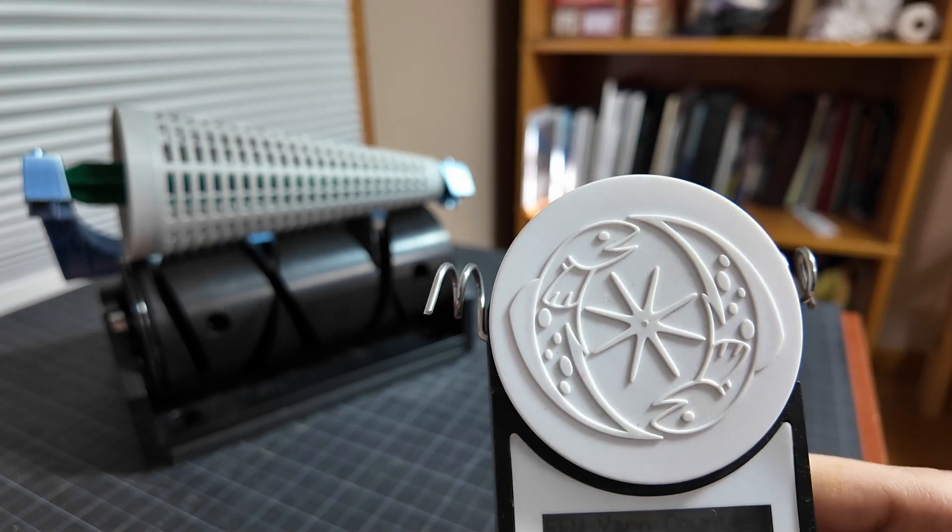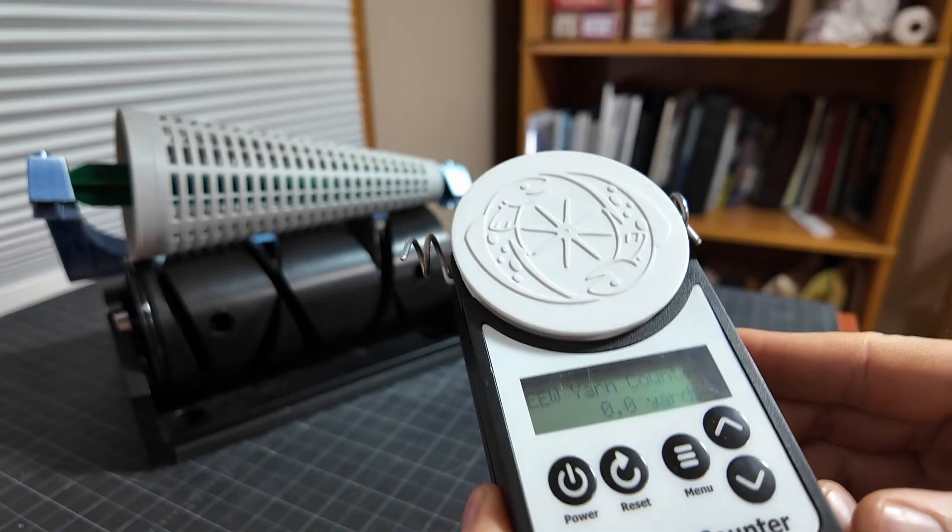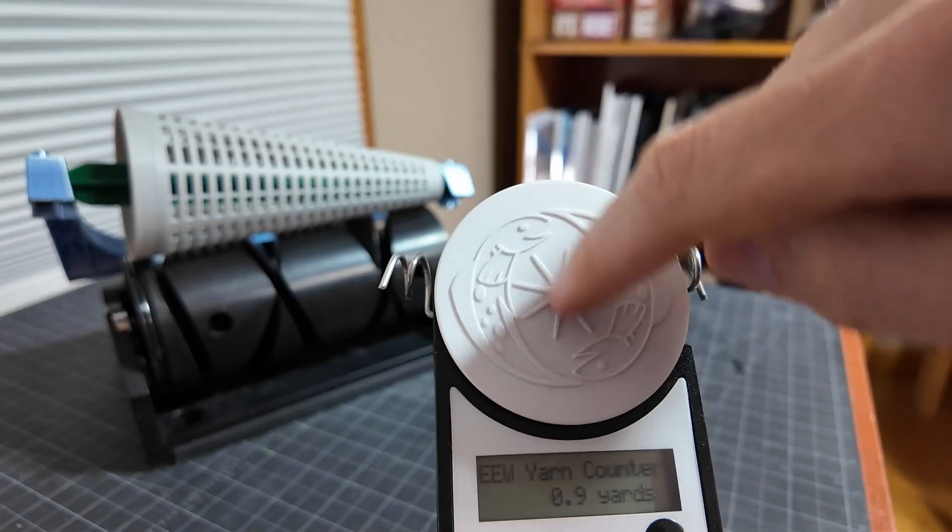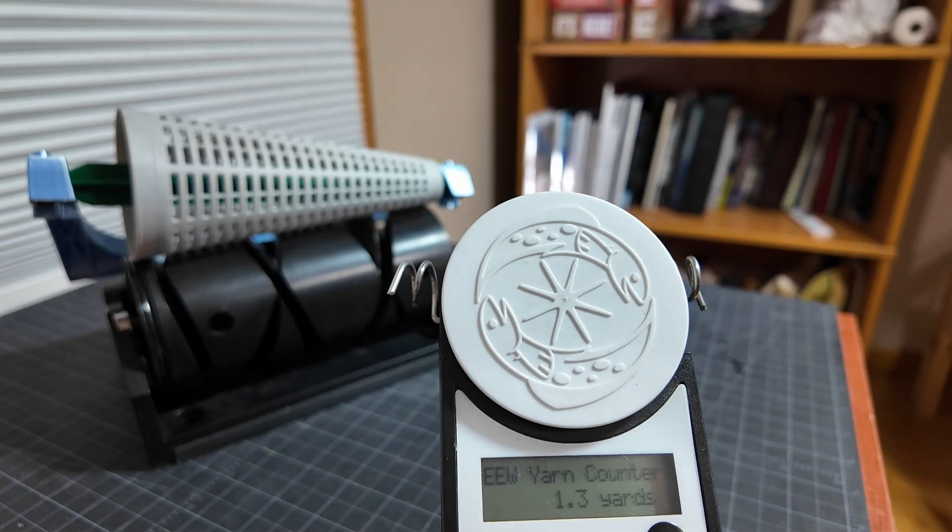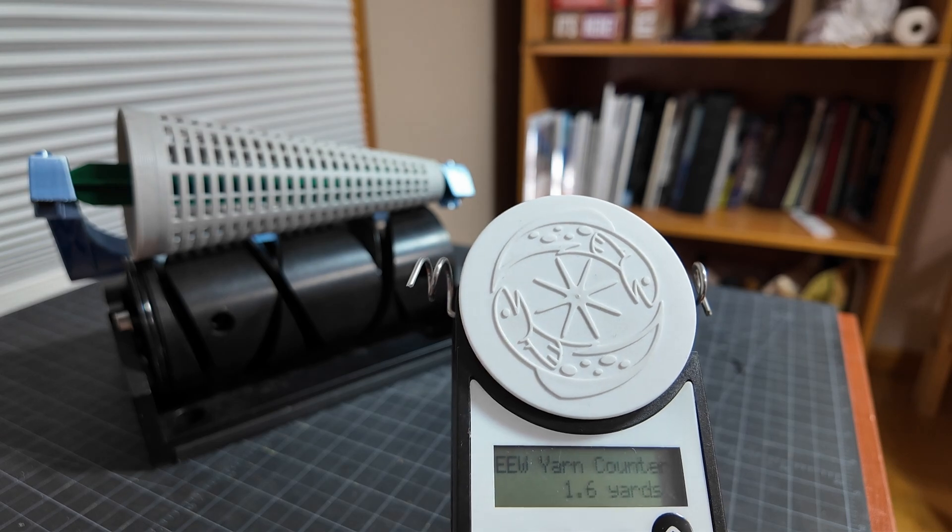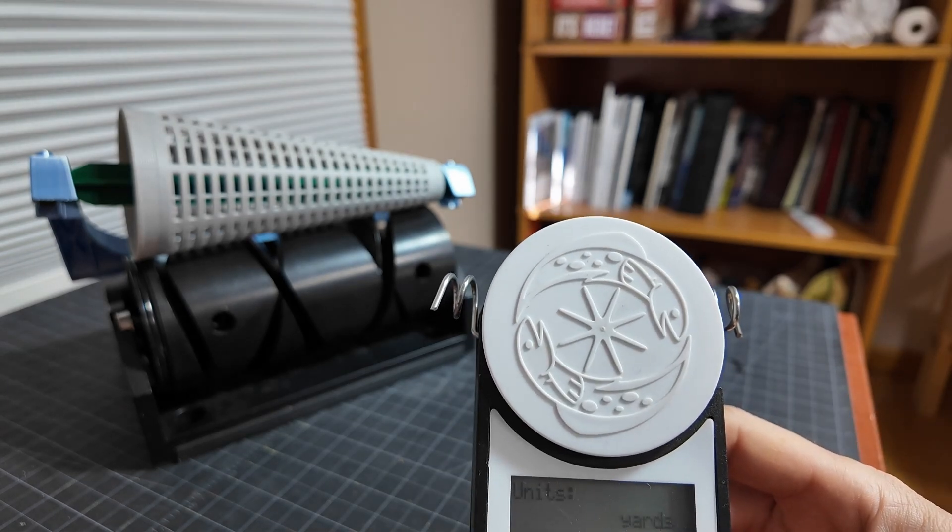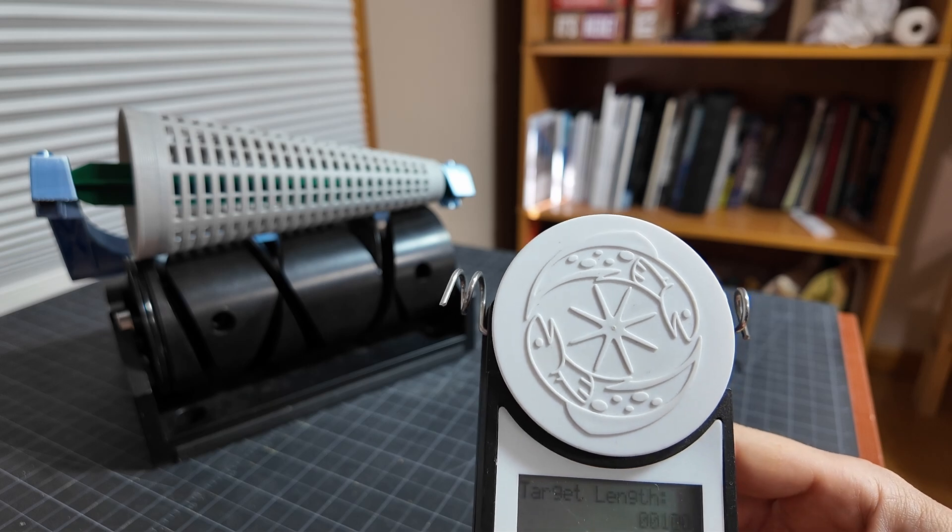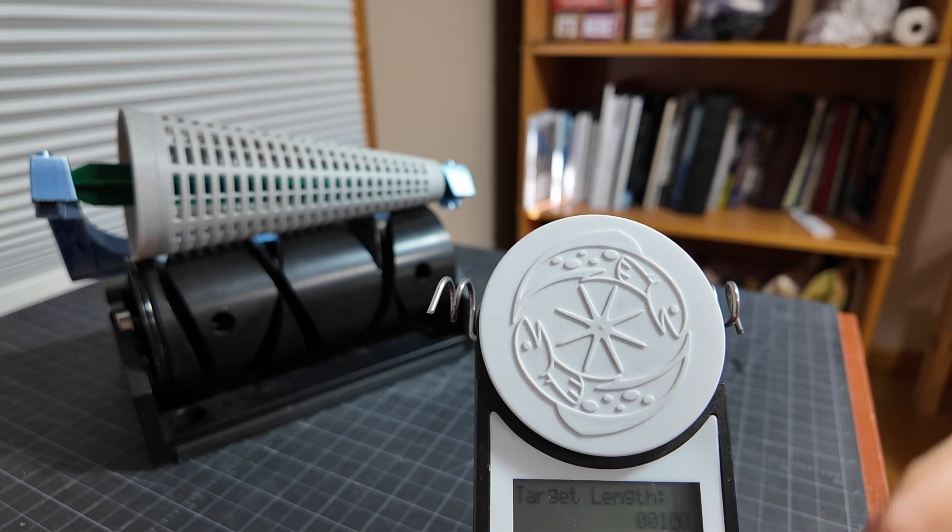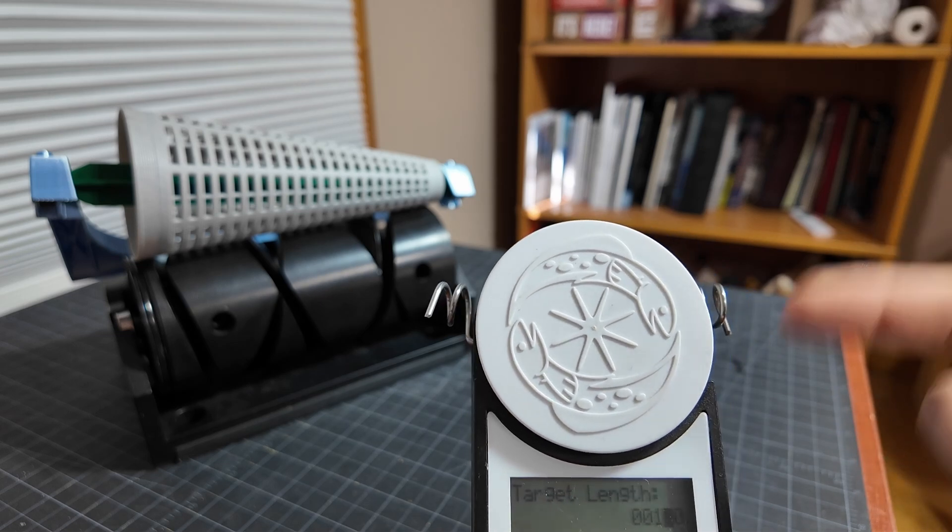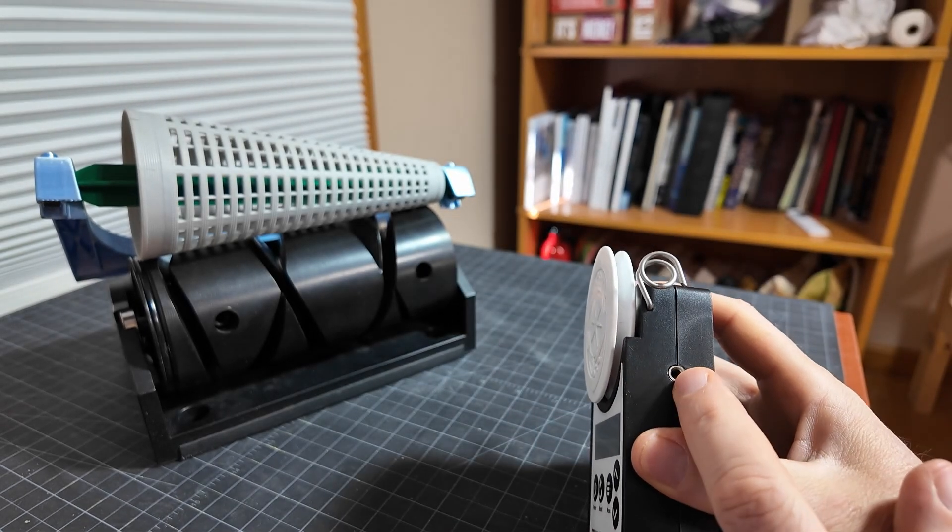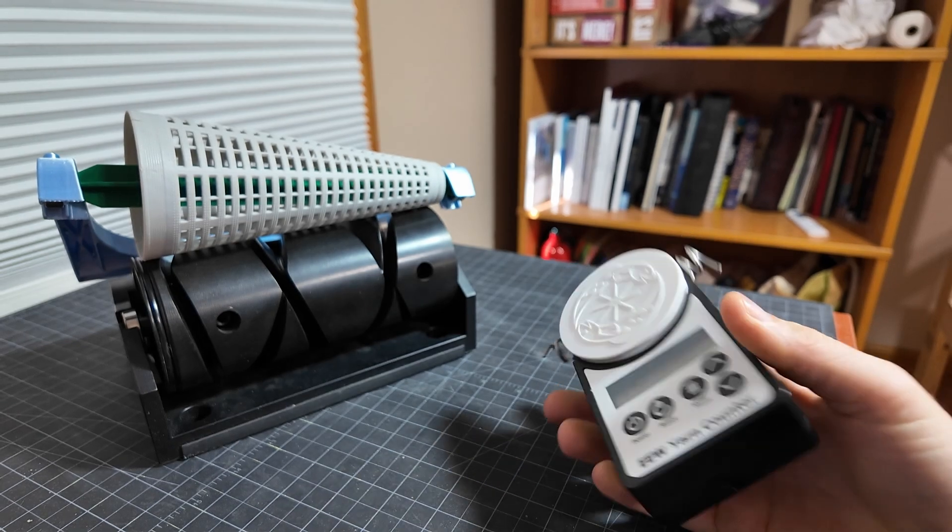So the yarn counter is designed so that when yarn spins around this disc, it causes this counter to go up. You can change it between yards or meters and it basically counts how much yarn has passed around the disc. But while I was making it, I had the idea that you could set a target length, and right now it's set to 100, but you can change that length to whatever you want. And when it reaches that length, it will send a signal through this port and tell a device to turn off.